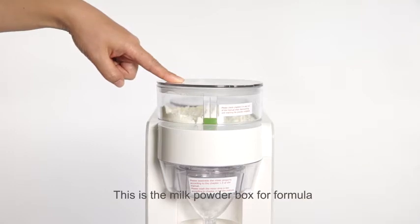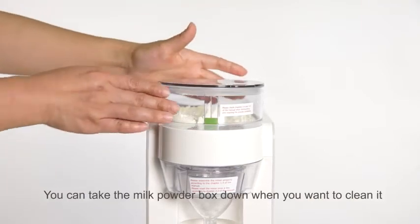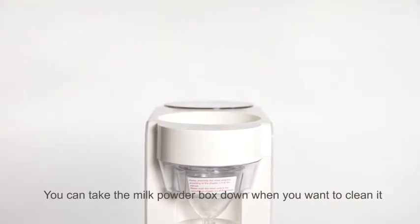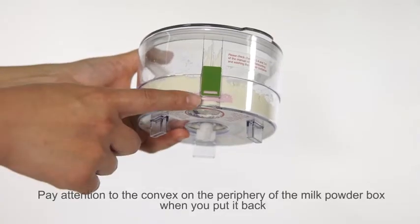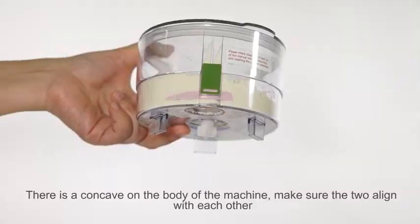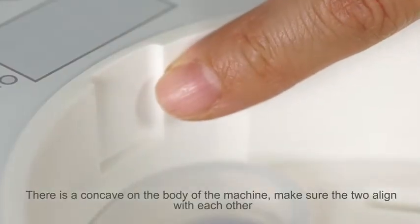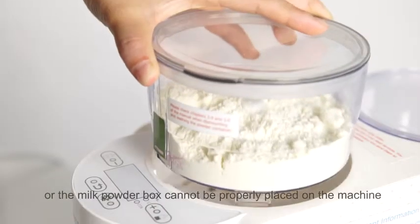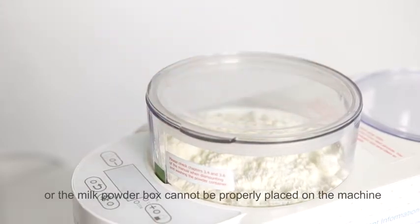This is the milk powder box for formula. You can take the milk powder box down when you want to clean it. Pay attention to the convex on the periphery of the milk powder box when you put it back. There is a concave on the body of the machine. Make sure the two align with each other or the milk powder box cannot be properly placed on the machine.